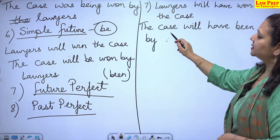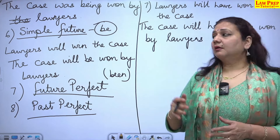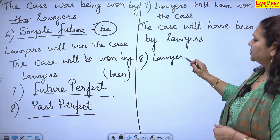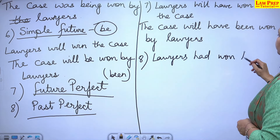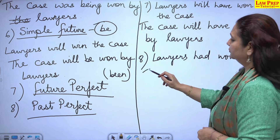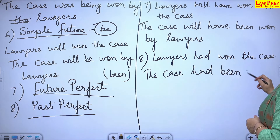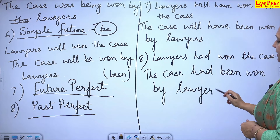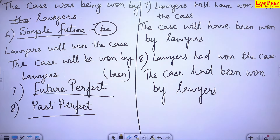To summarize: we have understood all eight tenses changes. The past perfect tense follows the same pattern — it's very simple. I have shown you all eight tenses using one example sentence throughout. All these eight tense changes are now clear. If not, please do put up your question.